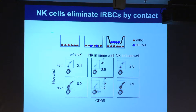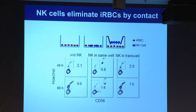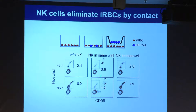In this model, if a human RBC gives a parasite, over time the percentage of cells infected increases from 48 hours to 96 hours. If we add NK cells in the culture, the infection is largely controlled.